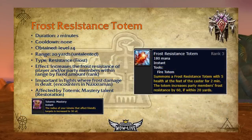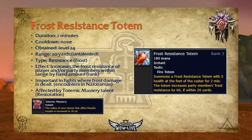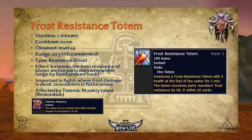Frost Resistance Totem has a two-minute duration, no cooldown, is obtained at level 24, and has a 20-yard range. It increases the frost resistance of players and party members within range by a fixed amount, increasing with each rank. This is very important in fights with heavy frost damage — for example, many encounters in Naxxramas including Sapphiron and Kel'Thuzad. It's affected by Totemic Mastery, increasing its range from 20 to 30 yards.